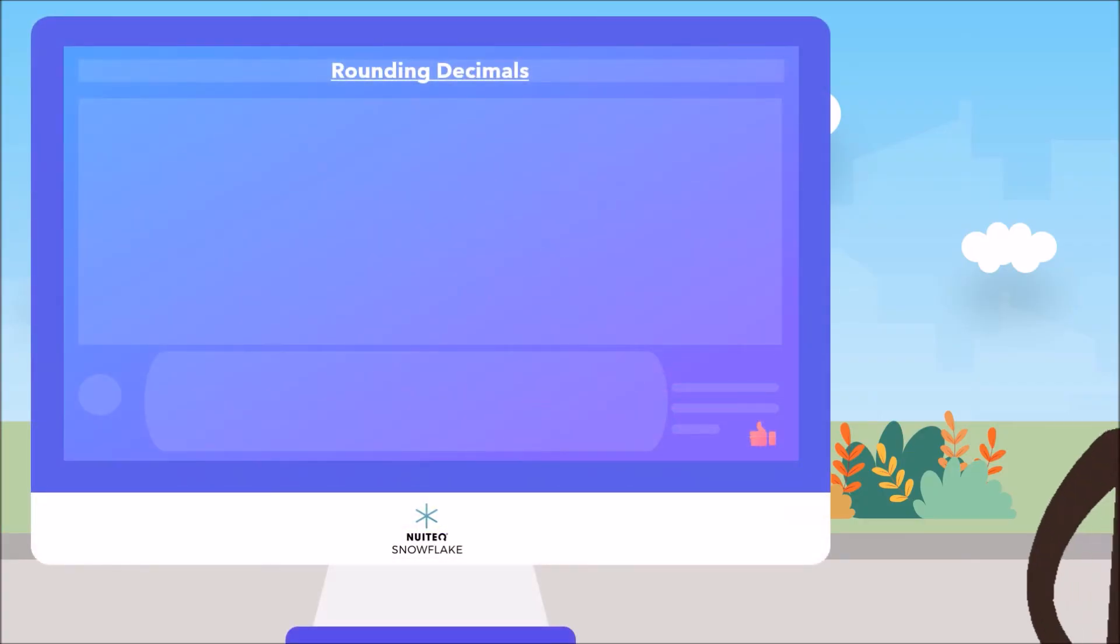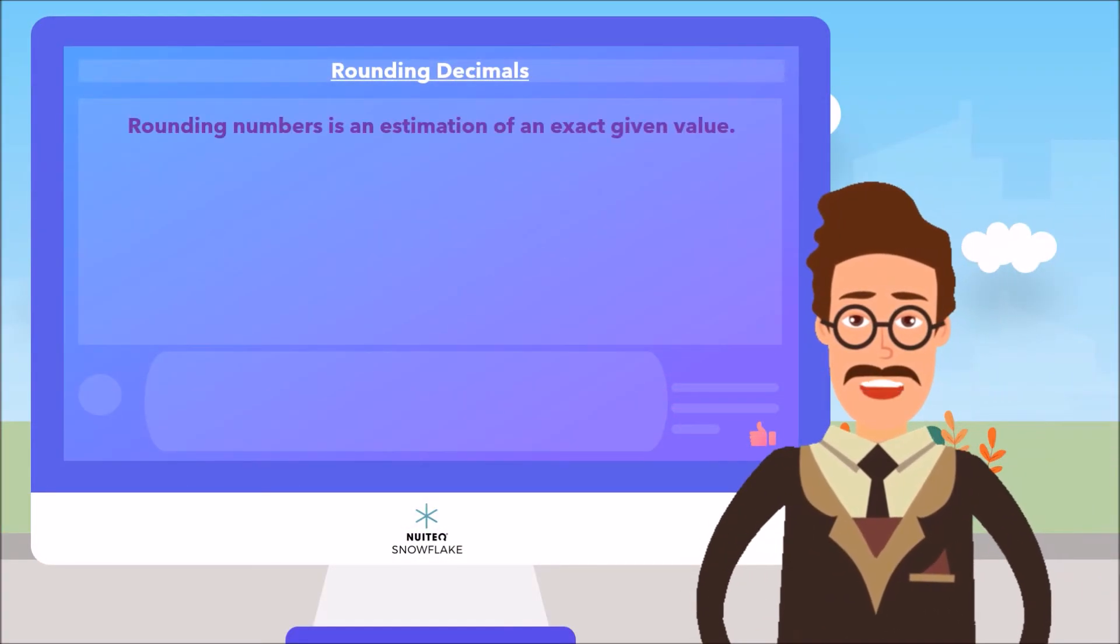Also, we should talk about rounding decimals. Rounding numbers is an estimation of an exact given value. This will give us different levels of precision. That means, an easier process when calculating a result.